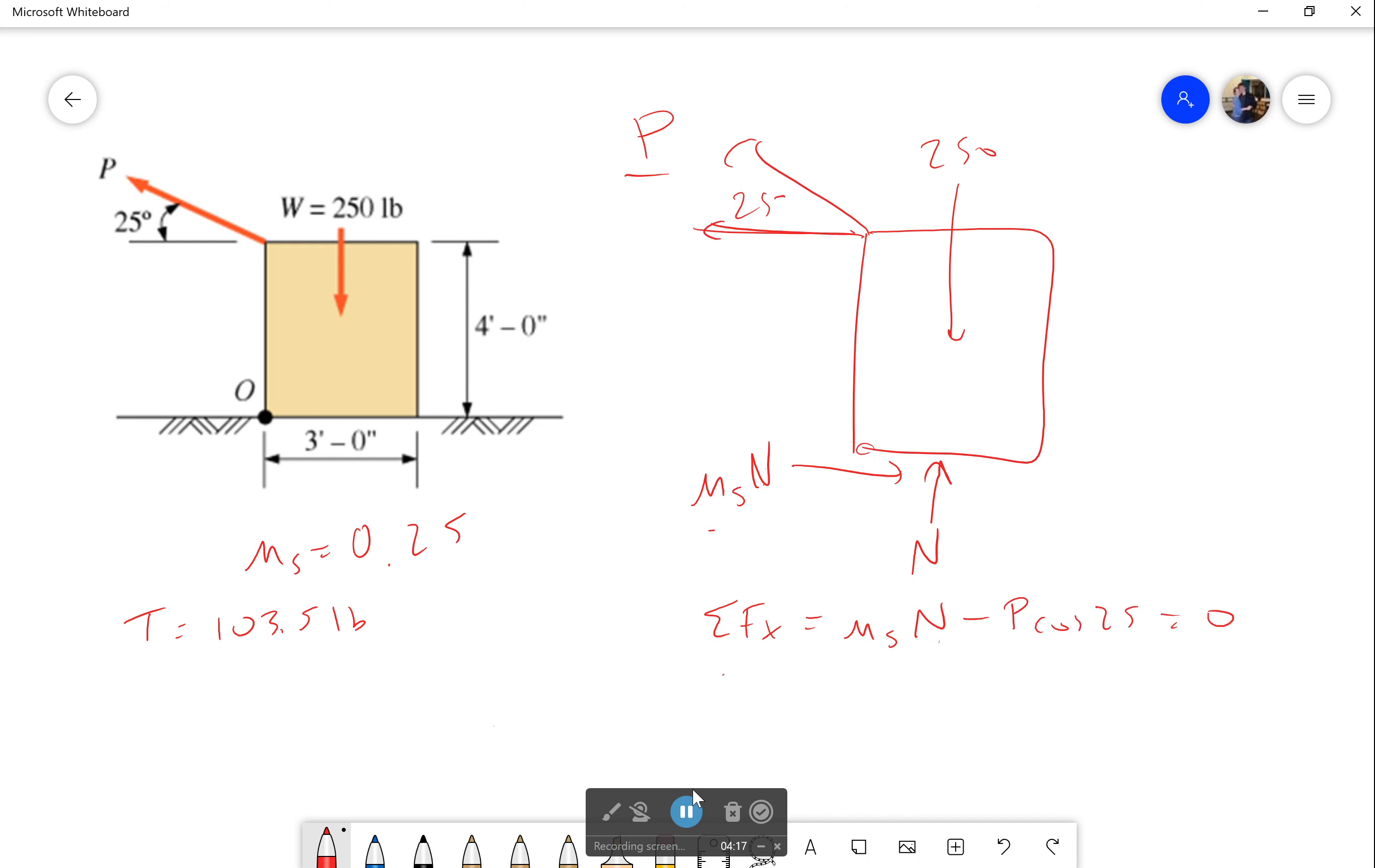And sum of the forces in the Y direction is equal to my normal force minus 250 pounds plus P sine of 25 which is equal to 0. Okay. Now if I solve this what I will get is that P is equal to 61.8 pounds.